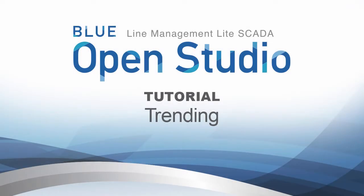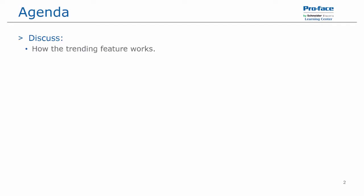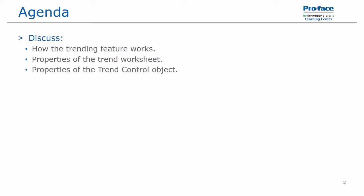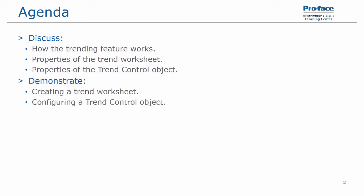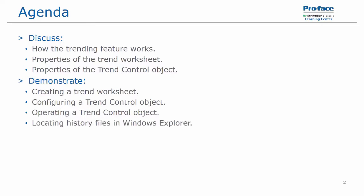Hello and welcome to the BlueOpenStudio tutorial video series. The topic of this video will be trending. We will be discussing how the trending feature works, properties of the trend worksheet, properties of the trend control object, and we will demonstrate creating a trend worksheet, configuring a trend control object, operating a trend control object, locating the history files in Windows Explorer, and viewing the history files outside of BlueOpenStudio.